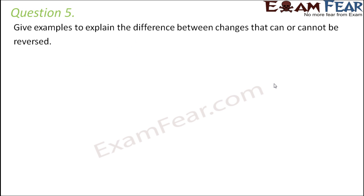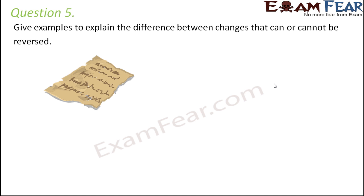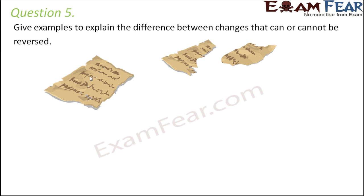Question number 5: Give examples to explain the difference between changes that can or cannot be reversed. Some changes cannot be reversed. For example, if you take a piece of paper and tear it into two pieces, you cannot immediately get back the original paper. You might join it with cello tape, but you will not get a paper exactly identical to the original. So this would be irreversible.